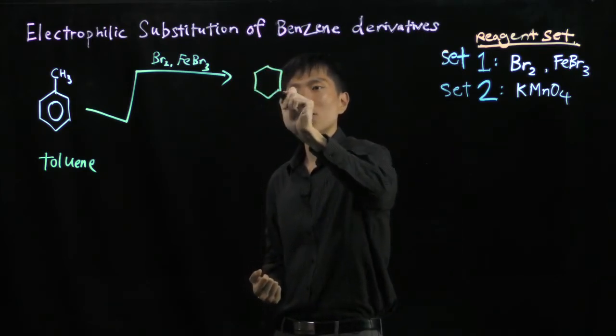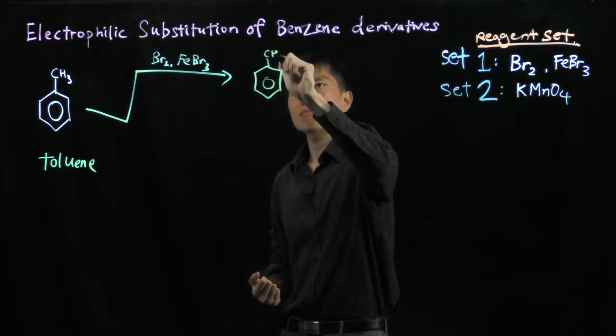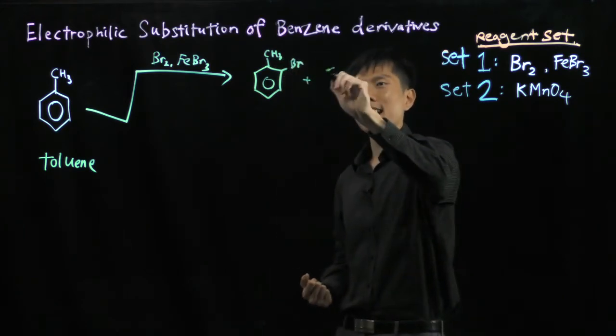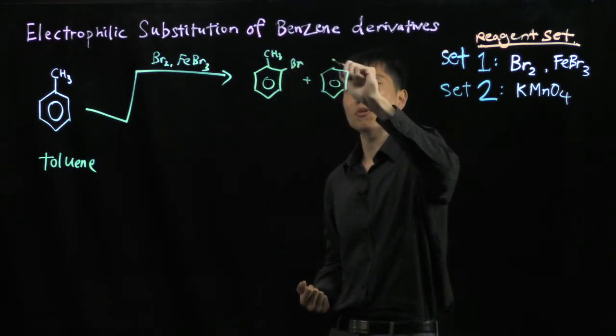This means we have isomeric products: a 1,2-product and a 1,4-product.